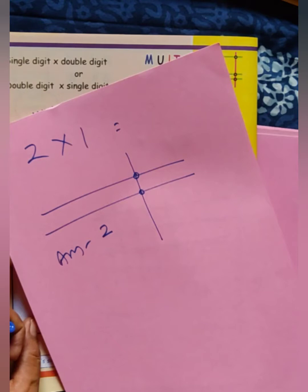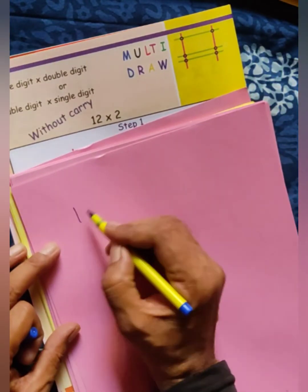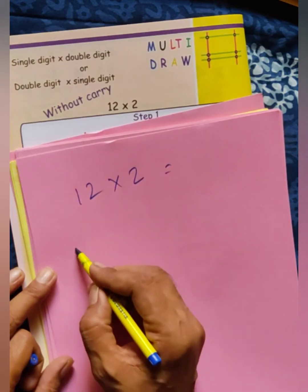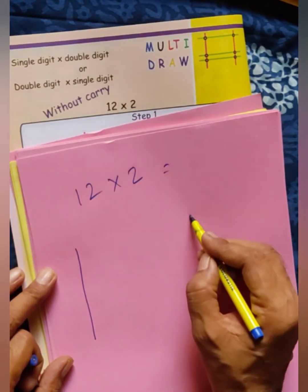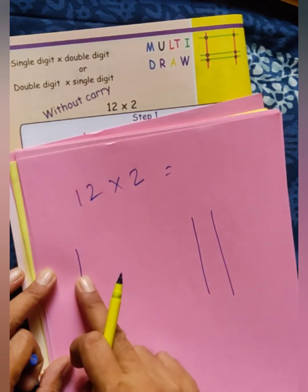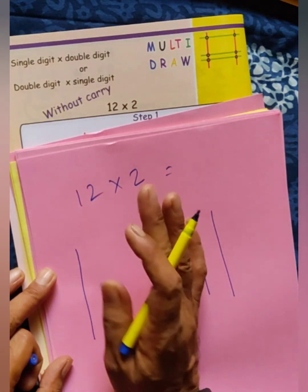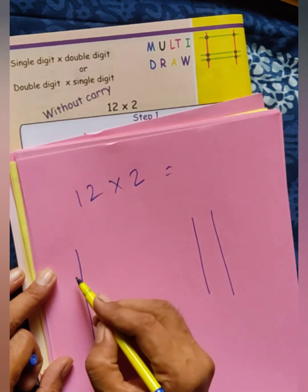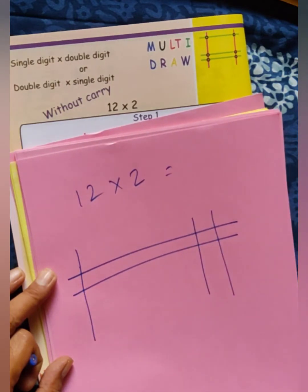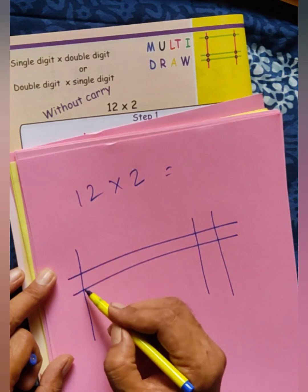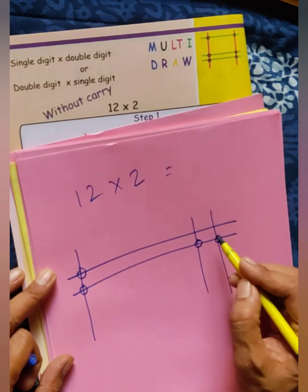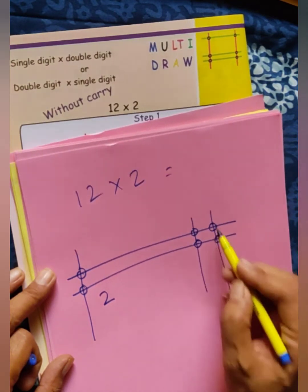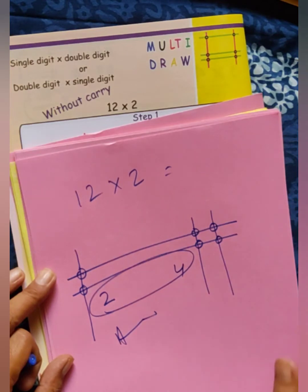Next question is 12 multiplied by 2. Never draw 12 lines. 12 means draw 1 line here and 2 lines here — that represents 12. Be careful. Then for multiply by 2, draw 2 lines like this. Now make circles where the lines are crossing each other: 1, 2 here, then 1, 2, 3, 4 here. The answer is 24.